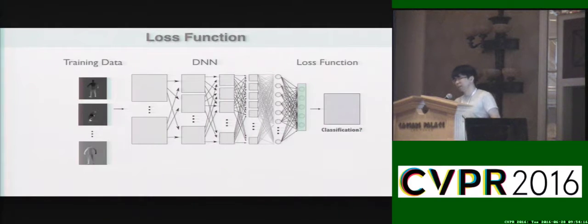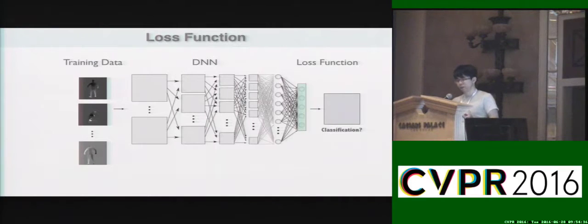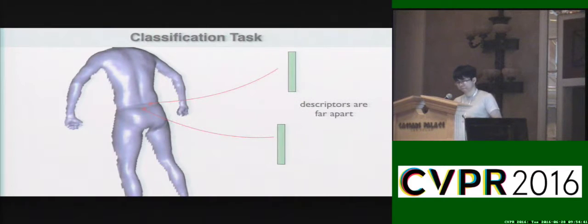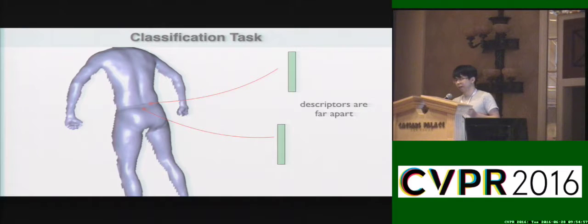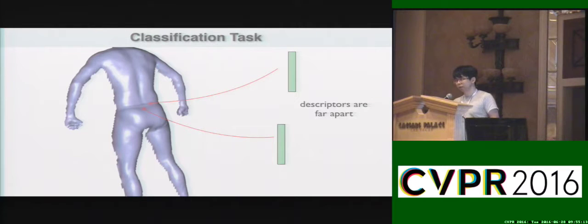We can synthesize millions of depth images as our training data, so training data is not an issue here. However, if we try to train such a network using typical classification methods, it will only ensure that points located in the same class have a similar descriptor, while points from different classes have very far apart descriptors. But what if the two classes are actually very close on the human body? The prediction crossing the boundary of these two classes may be unstable and will change suddenly from one place to another. Therefore, we would like to introduce our new training method to ensure the smoothness of the descriptor — that is to say, we try to smoothly embed the human body shape into a descriptor space.